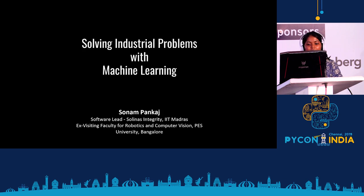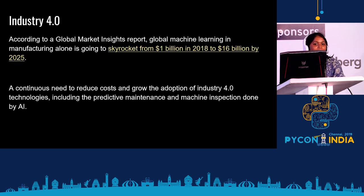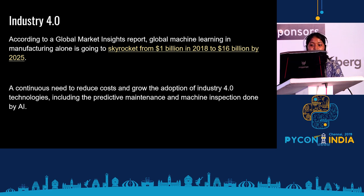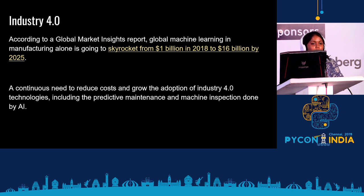Today we will be presenting a talk on solving industrial problems with machine learning. These days there's a big concept going on called Industry 4.0 — considered to be the fourth industrial revolution. All new technologies like machine learning, IoT, and AI are integrated together. It is estimated to be a $1 billion market in 2018, growing to a $16 billion market in 2025. It includes manufacturing, inspection services, predictive maintenance, and logistic maintenance.